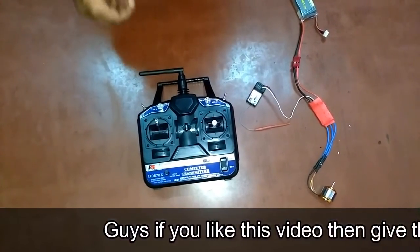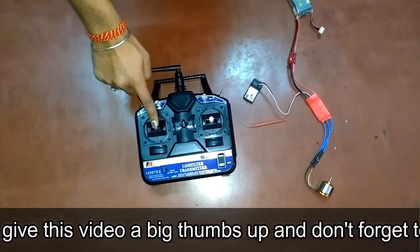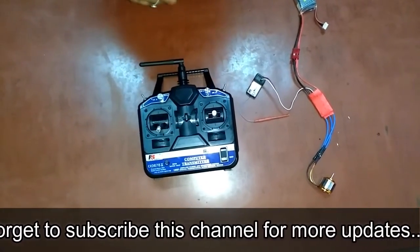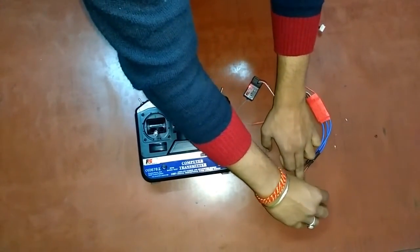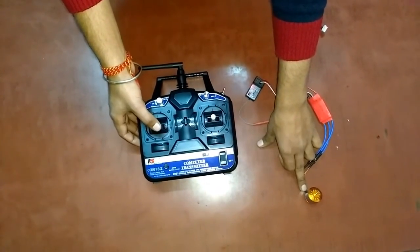Now bring your throttle stick to the lowest throttle point and you will hear two short beeps and one long beep sound coming from the motor, which shows that your ESC has now recognized the highest and the lowest throttle value and now it is calibrated.